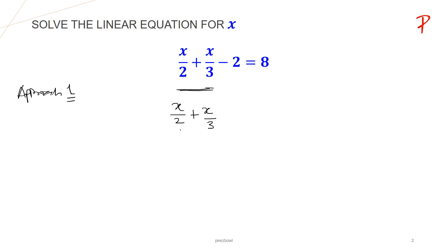For this, we need to find out the LCM of 2 and 3. So the LCM of 2 and 3 is 6. Now we need to make the denominator of both these fractions equal to 6. So let us see how we do it.